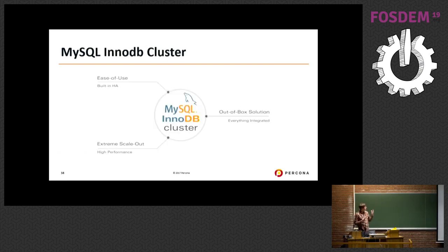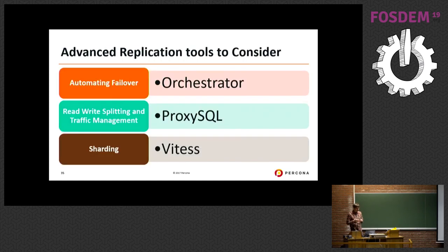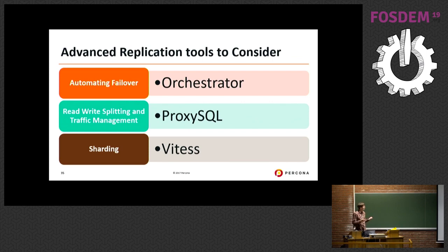With MySQL group replication, we also have MySQL InnoDB Cluster — a higher-level package that includes MySQL Shell and MySQL Router for traffic management. Finally, if you're still using classical MySQL replication and want to make it more robust, there are community tools you should know about: Orchestrator for automating failover; ProxySQL for read-write splitting and traffic management with many features; and Vitess for sharding MySQL.